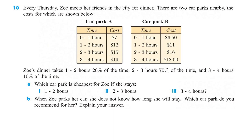So 0 to 1 hour is $7, 1 to 2 is $12, and so forth. Which is cheapest if she stays 1 to 2 hours? That's car park B, because that's $11 versus $12. For 2 to 3 hours it's car park A because that's $15. And for 3 to 4 hours it's car park B because that's $18.50. Zoe parks her car and she does not know how long she's going to stay. Which car park would you recommend for her?